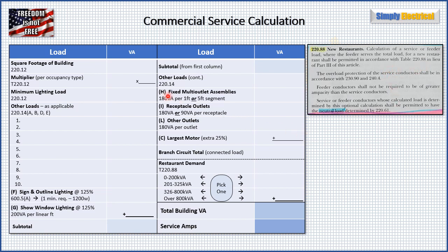I've created a table to do exactly that. We're just going to go through, find out what all of our loads are, and add them up. Once we get to the end, we'll get a total branch circuit load — which is our connected load — and then we're going to take that number and apply it to table 220.88. Then we'll come up with our total billing VA.